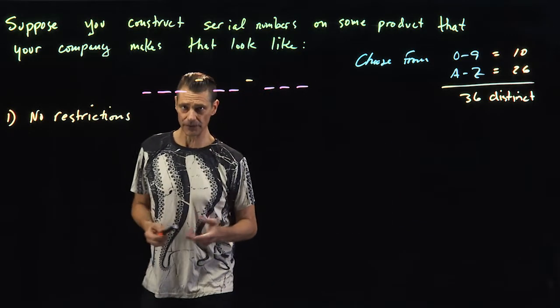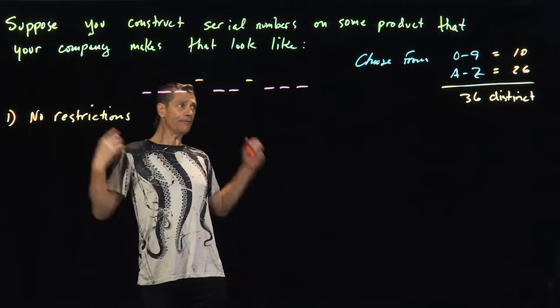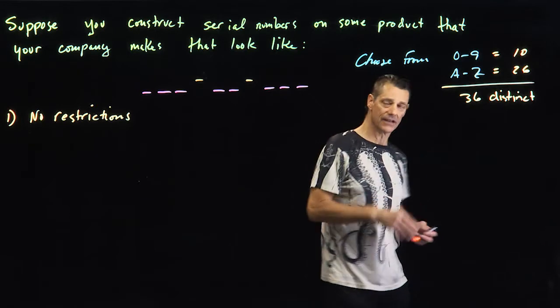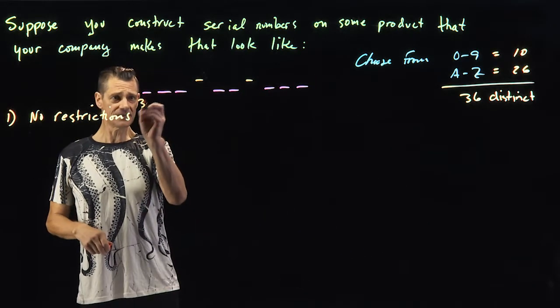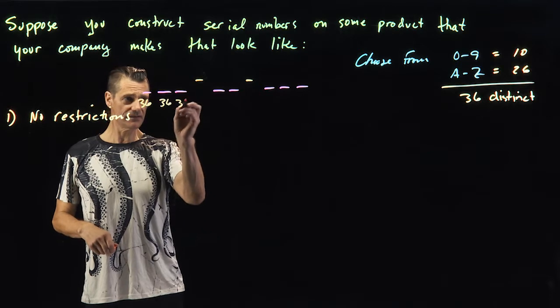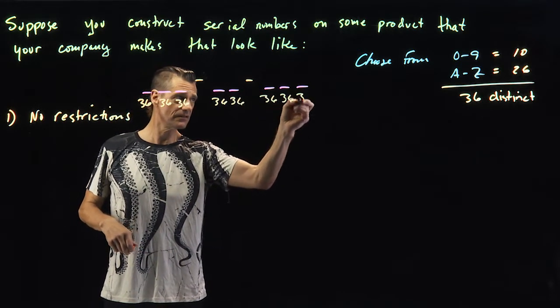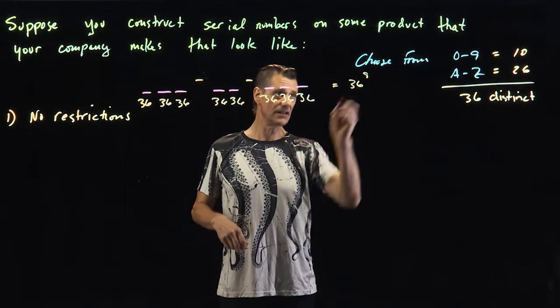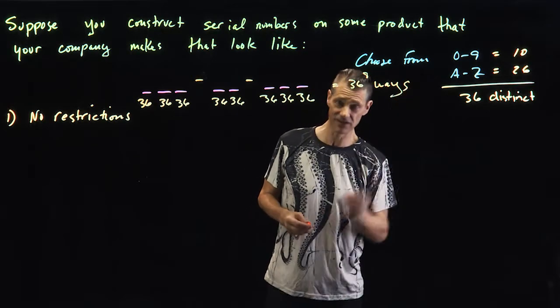How many different serial numbers can we create if there are no restrictions? Well, if there are no restrictions, we can pick anything from any of these. It didn't say we couldn't have repeats. So we can do this 36 ways, this 36 ways, 36, 36, 36, 36, 36, 36. This is 36 to the eighth ways. I didn't even bother looking that up on Wolfram. That's just a whole bunch.